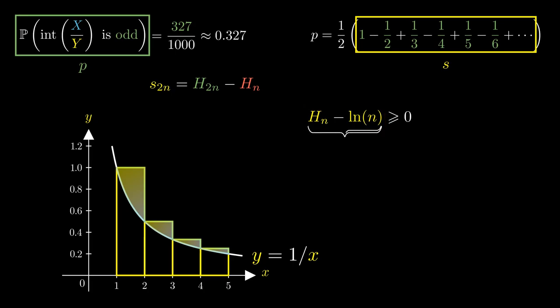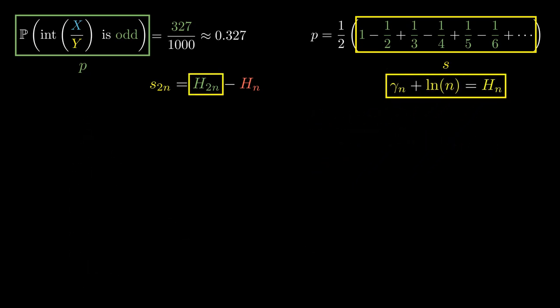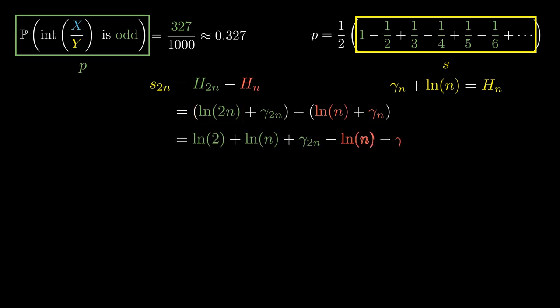We're going to call this sequence gamma subscript n. We can actually show that this sequence of numbers converges to the decimal 0.577, so on and so forth. Let's write this as gamma sub n plus the logarithm of n equals H sub n. Let's substitute H sub n with this expression as well as H sub 2n. Now we can split up the logarithm of a product into a sum of logarithms. We can cancel out the logarithms to obtain log of 2 plus gamma sub 2n minus gamma sub n.